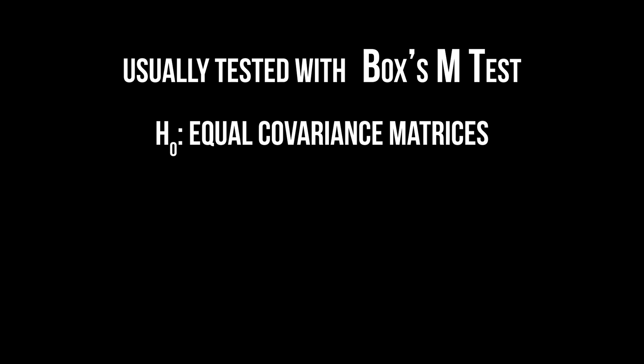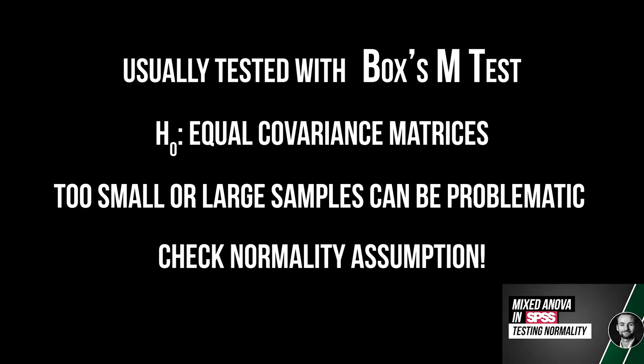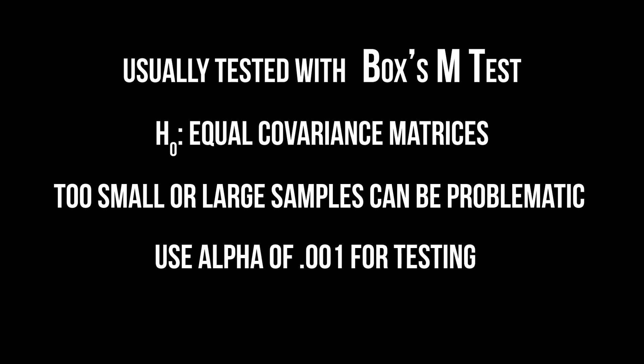A common test for homogeneity of covariances is Box's m-test. Its null hypothesis assumes homogeneity of the covariance matrices, which means that it is better not to reject the null hypothesis. However, Box's m-test is prone to inaccuracies if the sample size is too large or too small, or if the normal distribution assumption is violated. It is therefore advised to proceed with caution and to use a lower alpha value than usual.